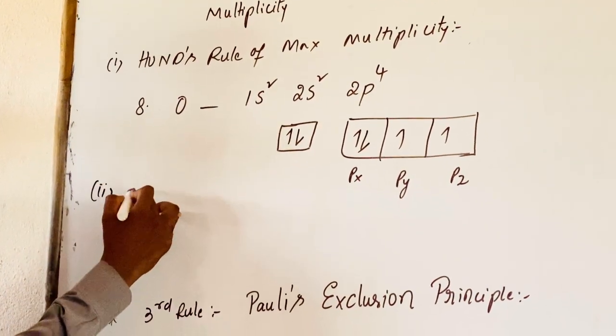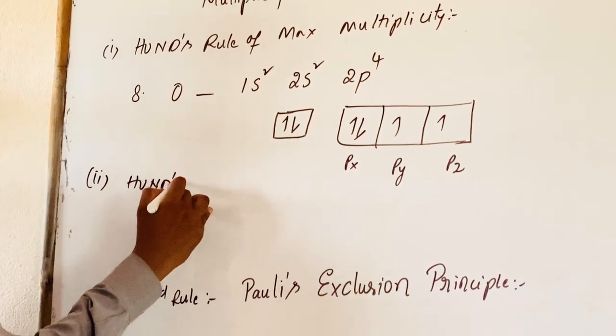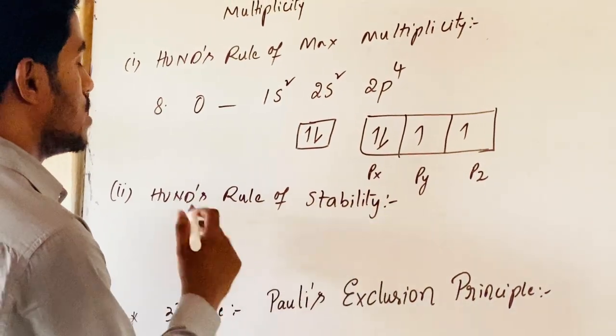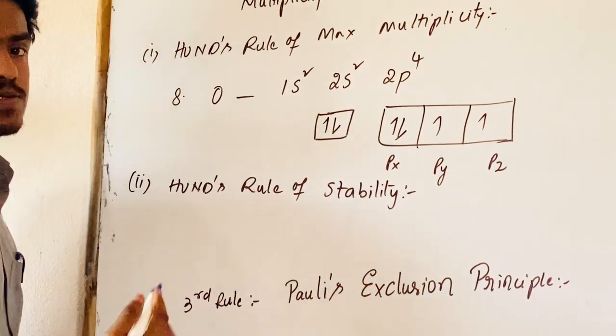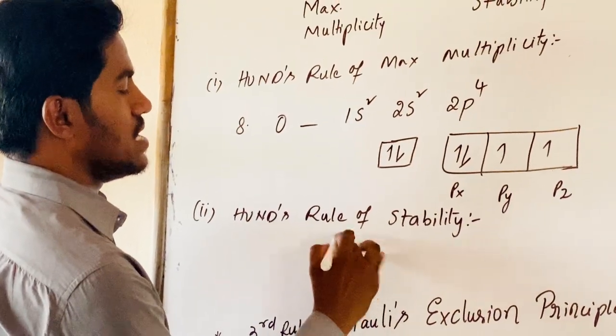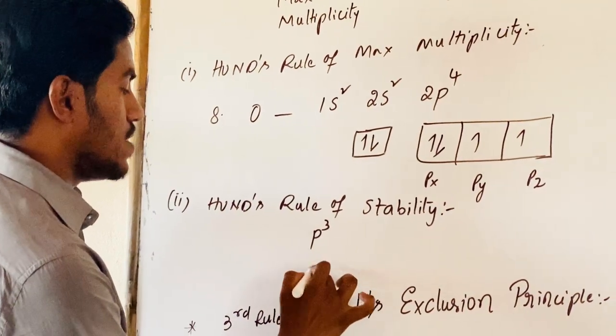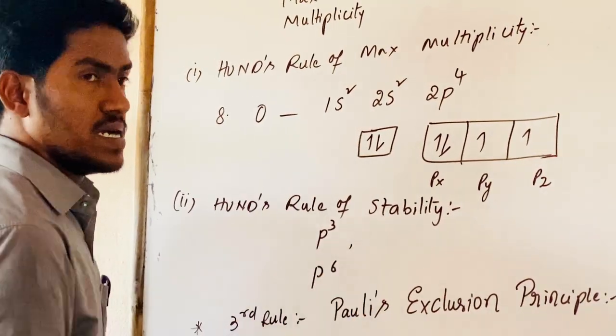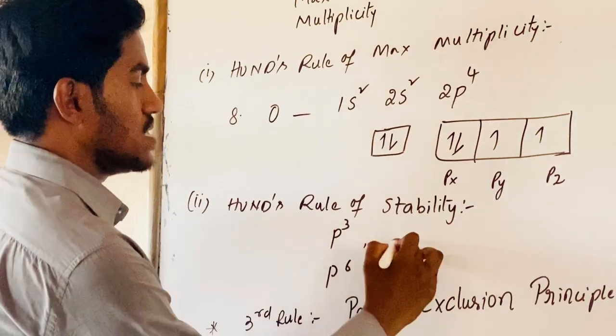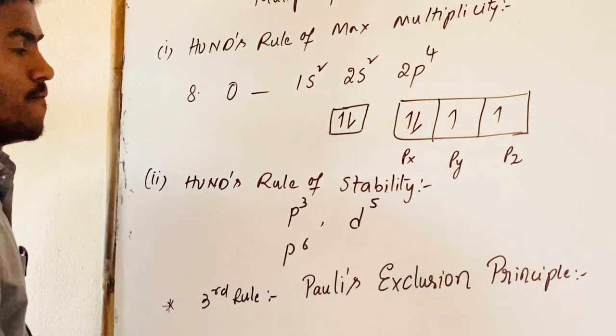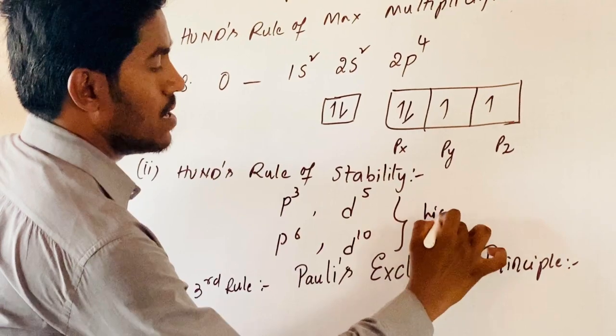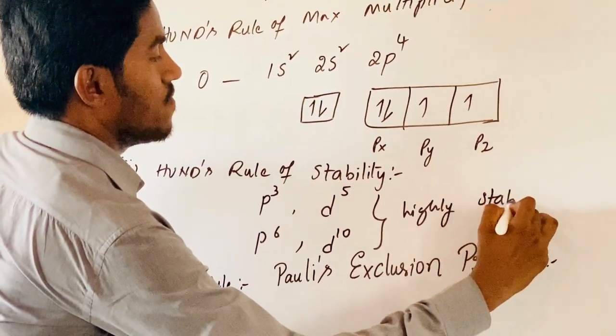Similarly, Hund's rule of stability. Half-filled or full-filled degenerate orbitals are highly stable. P-orbital can have 3 orbitals, each 2 electrons, 3 times 2 equals 6 electrons. Half-filled P-orbital is P3. Full-filled P-orbital is P6. D-orbital degenerate orbitals are 5, 5 times 2 equals 10 electrons maximum capacity. D-orbital 5 electrons as half-filled and 10 electrons as full-filled. These are highly stable according to the principle of stability.